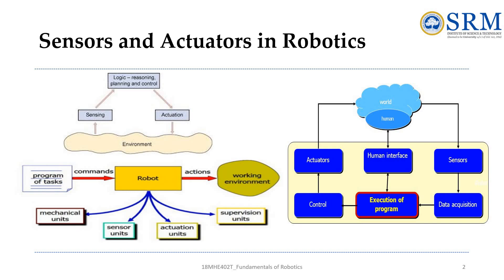Mechanical units are the robot arms — rigid links connected through rotational or prismatic joints, each with one degree of freedom. Mechanical subdivisions include the supporting structure for mobility, the wrist for dexterity, and the end effector for task execution, for example manipulation.